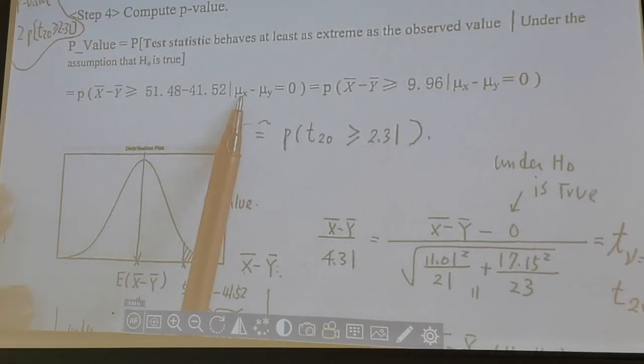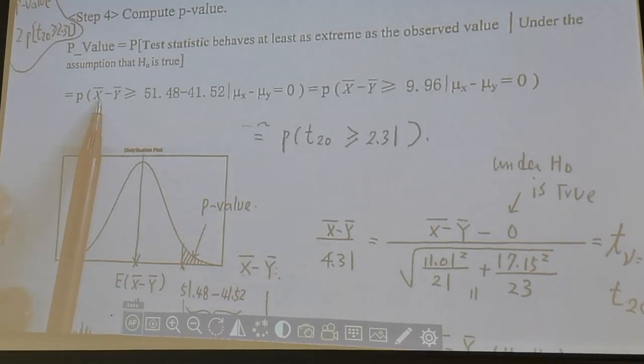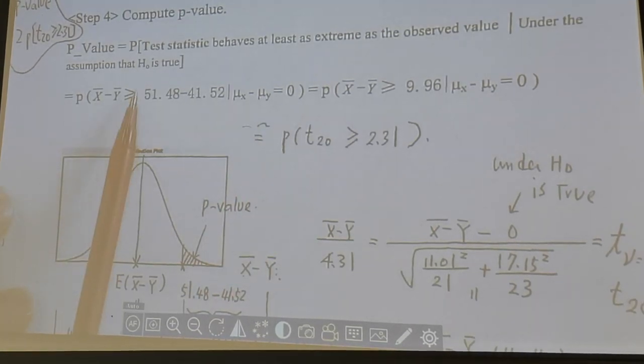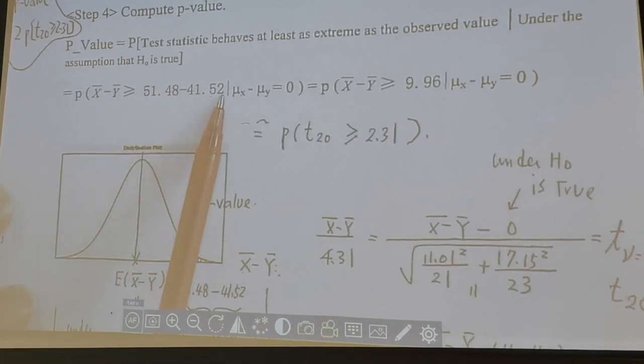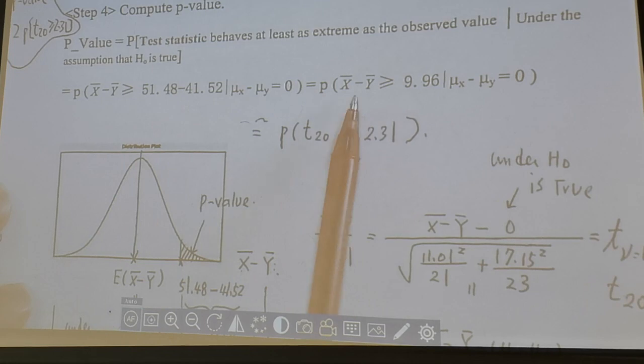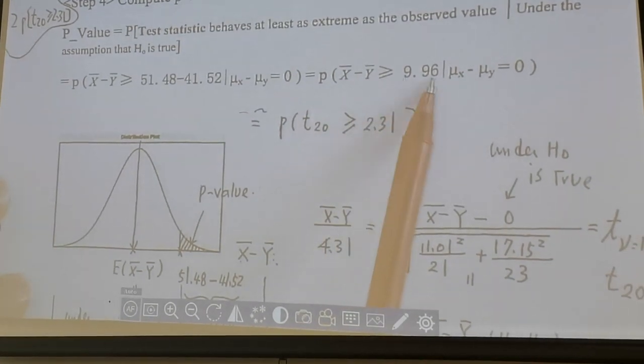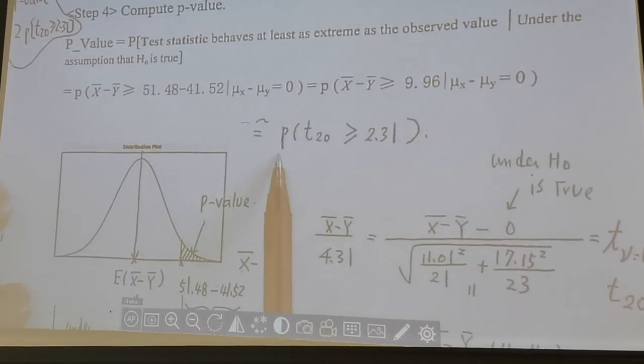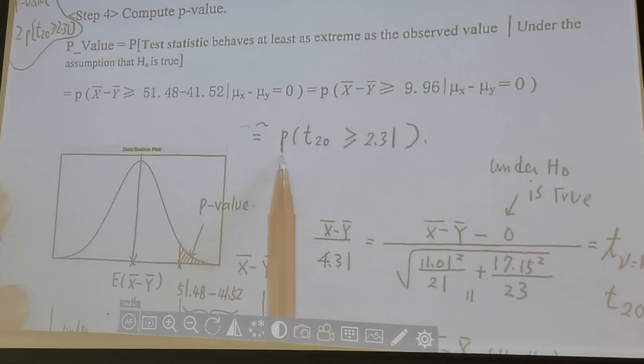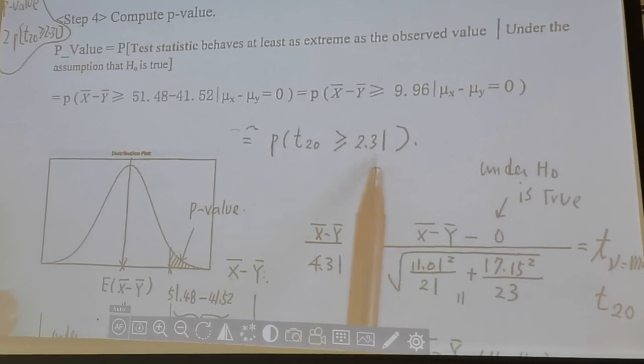Probability under H0 is true, mu x minus mu y equal to 0. So how likely test statistic, x-bar minus y-bar, greater or equal to 51.48 minus 41.52. And I simplify it. How likely x-bar minus y-bar greater or equal to 9.96, given mu x minus mu y equal to 0. After standardization, we get roughly equal to probability t with 20 degrees of freedom, greater or equal to 2.31.